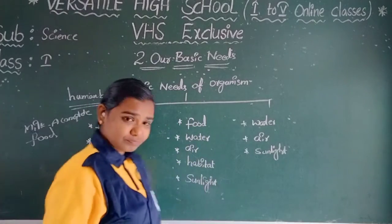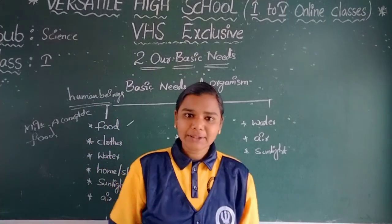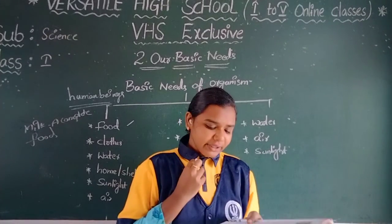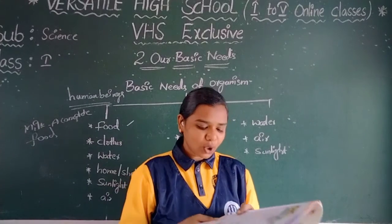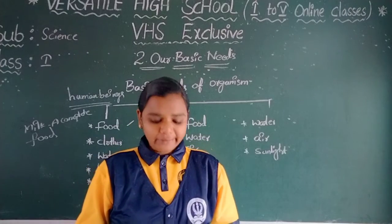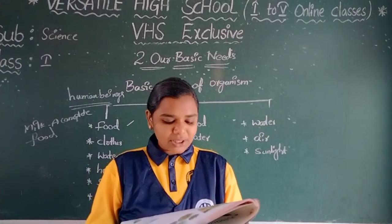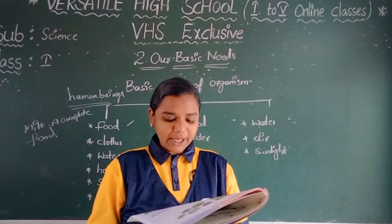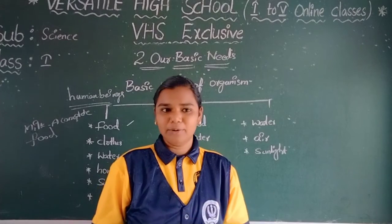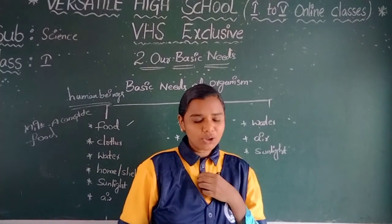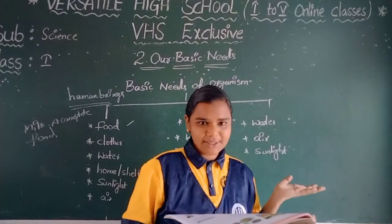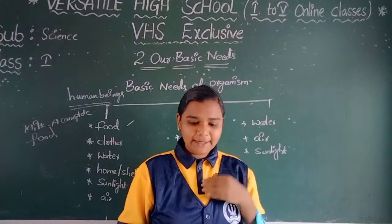Next: clothes. We all wear clothes. Clothes cover our body and protect us from heat, cold, and rain. Clothes also protect us from dust. Clean and well-ironed clothes help us look good and presentable. We wear clothes according to the weather or season.